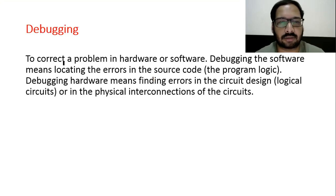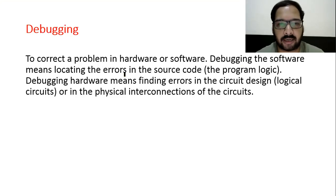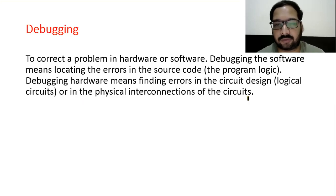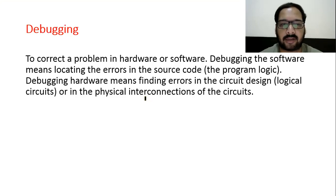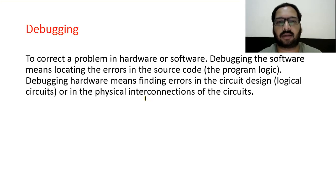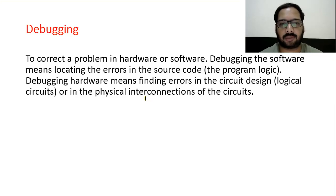Debugging: to correct a problem in hardware or software. Debugging software means locating the error in the source code and the program logic. Debugging hardware means finding errors in the circuit design, logical circuits, and physical interconnections. Debugging means identifying what the problem is and resolving it. A bug is an error; debugging is identifying and resolving that error. You have often heard someone say 'I am debugging' — it means identifying errors in the code.